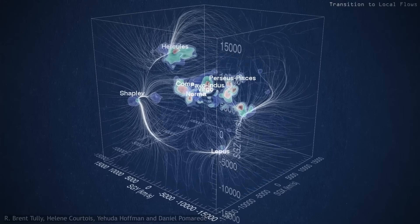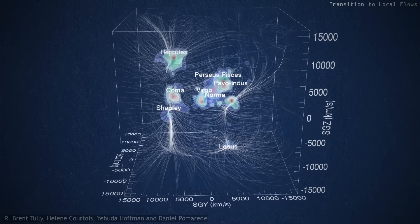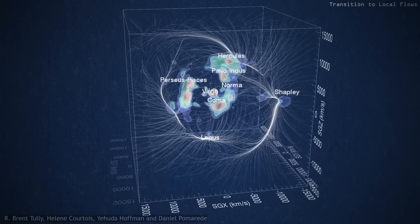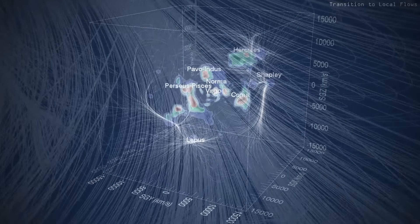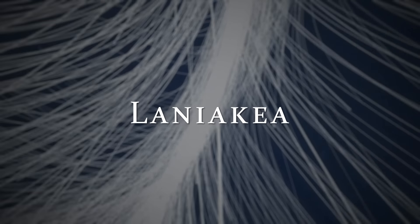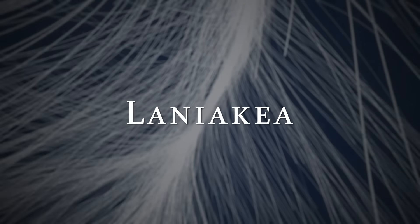It turned out what we thought was a supercluster was just a single branch, one of four of a much larger assemblage, an entity that Tully and his collaborators named Laniakea, a Hawaiian word that roughly translates to immense heaven or open skies.